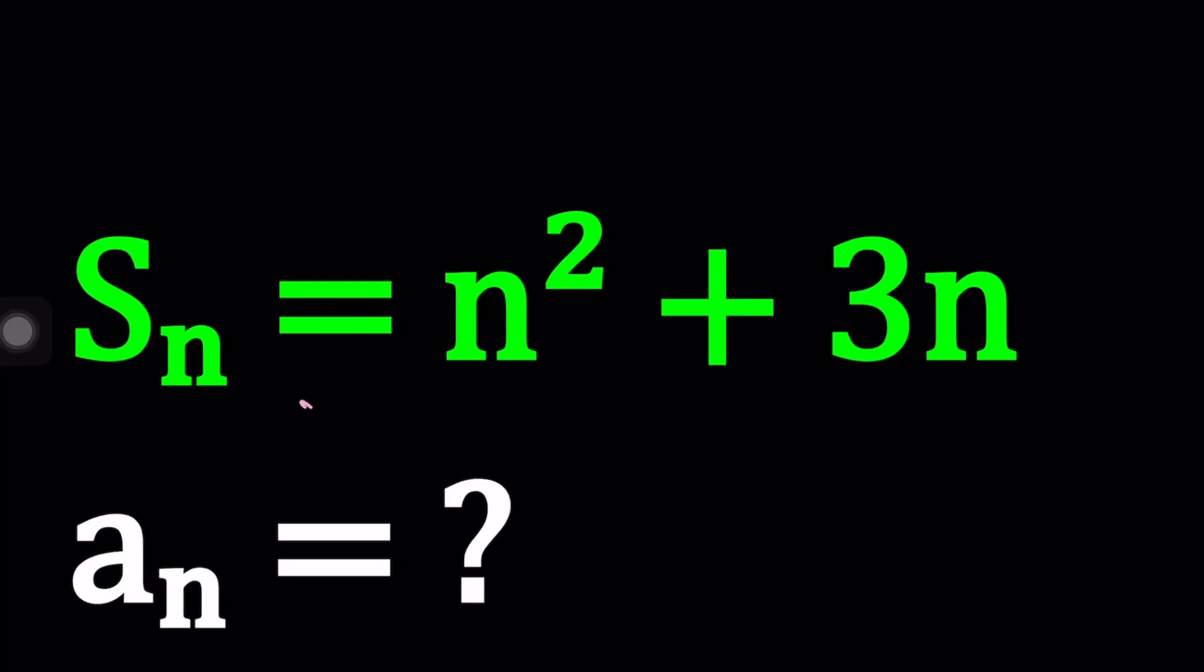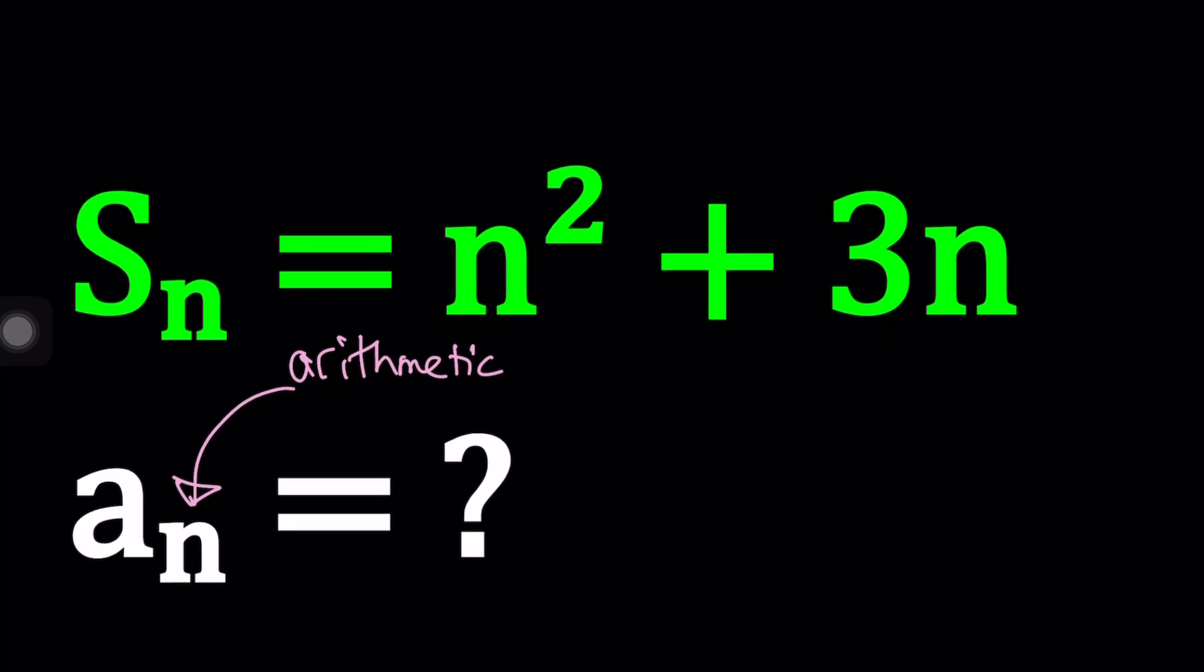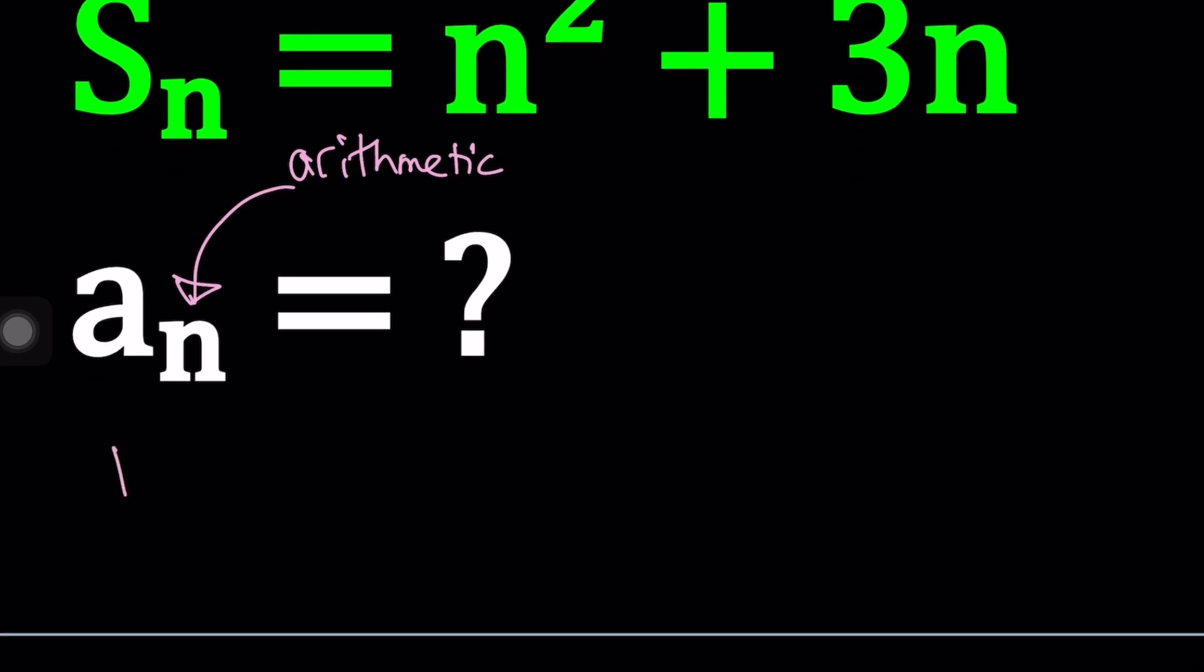Hello everyone. In this video, we're going to be finding the general term of an arithmetic sequence. In other words, a sub n is arithmetic, and we're given the sum of the first n terms, which is given by s sub n, and we're going to be finding the general term for this arithmetic sequence. So I'll be presenting two methods, and let's start with the first one.